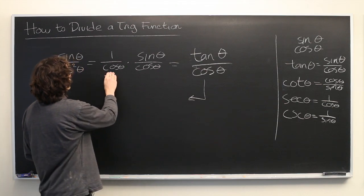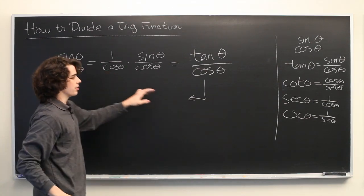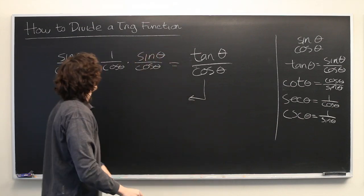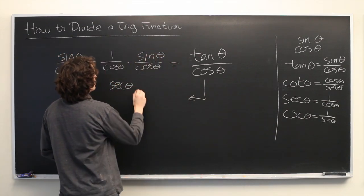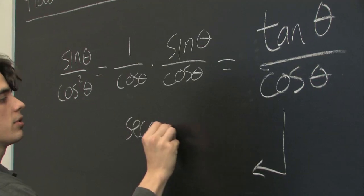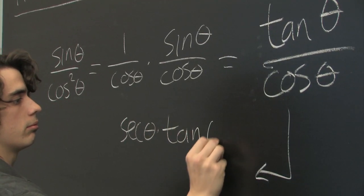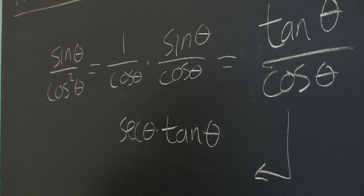But let's take this 1 over cosine theta and we'll call that equal to secant. So, we get secant theta times tangent theta. That works just fine.